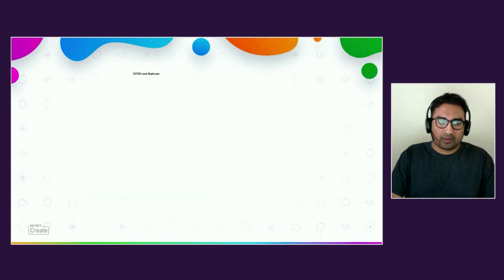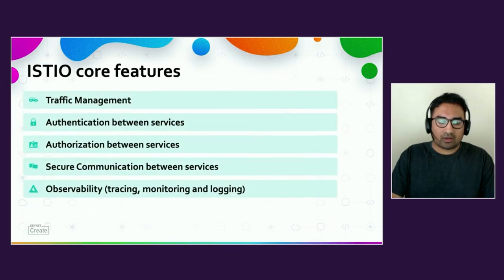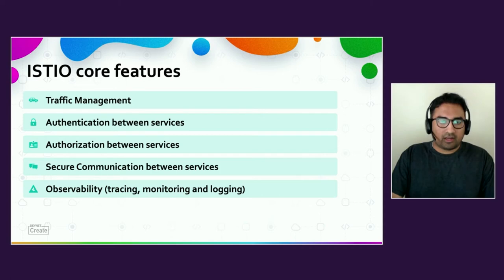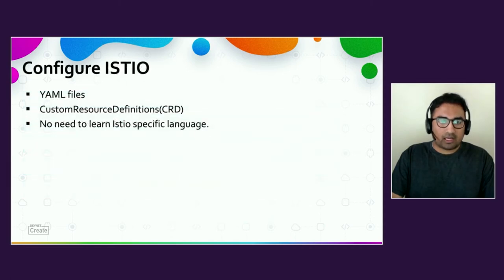Let's look into the core features of Istio: secure service-to-service communication using TLS encryption, strong identity-based authentication and authorization, automatic load balancing of HTTP and TCP traffic, and fine-grained control of traffic behavior with rich routing rules, retries, failovers, and fault injection. There are also automatic metrics, tracing, and logs for all traffic in the cluster, including ingress and egress. We can configure Istio using Kubernetes YAML files and custom resource definitions. A custom resource extends the Kubernetes API, allowing you to introduce your own API into the cluster and define your own pods, deployments, and replica sets — no need to learn a specific language for Istio.